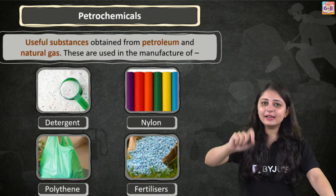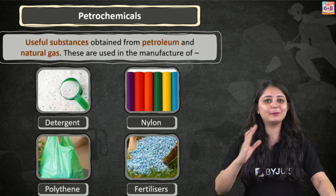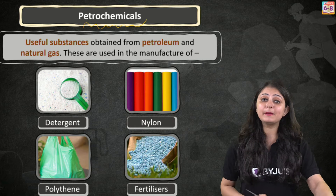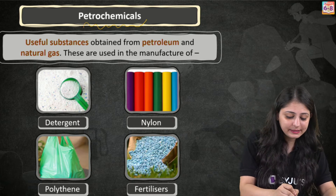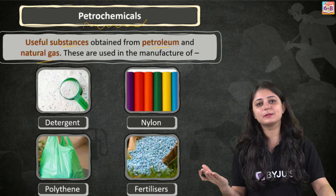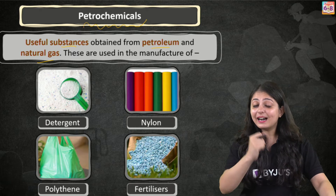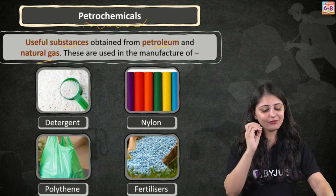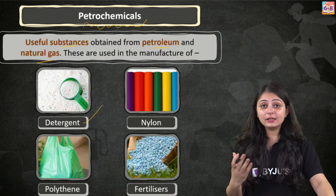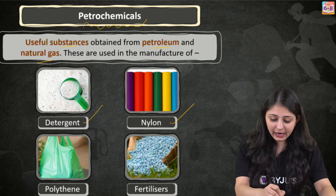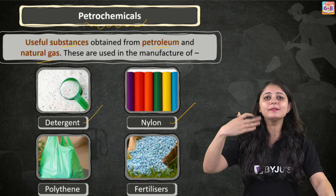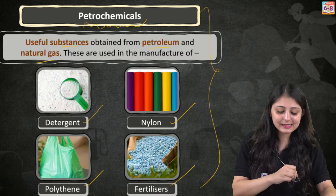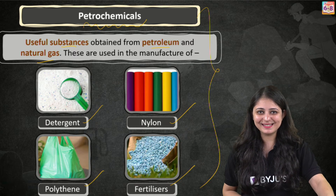Another very important term when we talk about petroleum and natural gas is petrochemicals — the useful substances that we get from petroleum and natural gas. They are used in manufacturing many things. For example, detergents, fibers like nylon, polyester, and acrylic. Polythene and fertilizers are also important uses of petrochemicals.